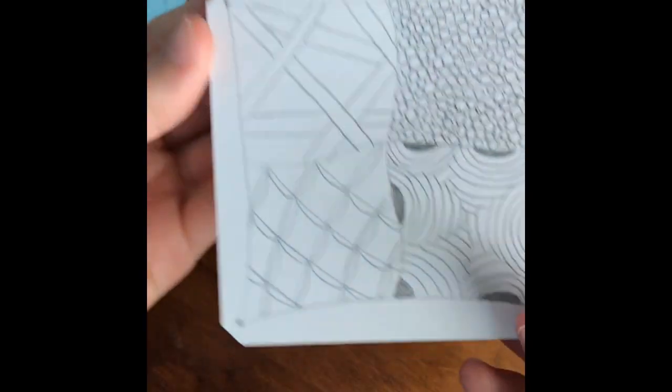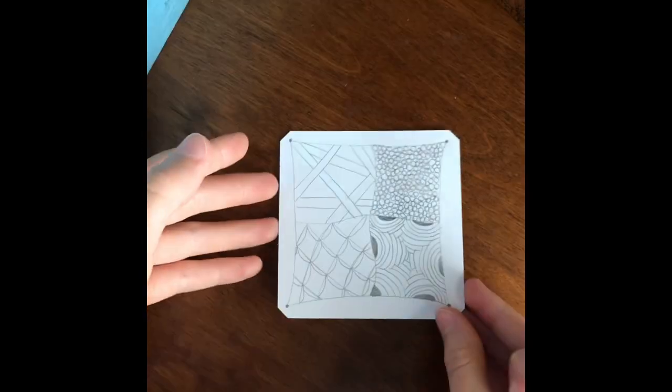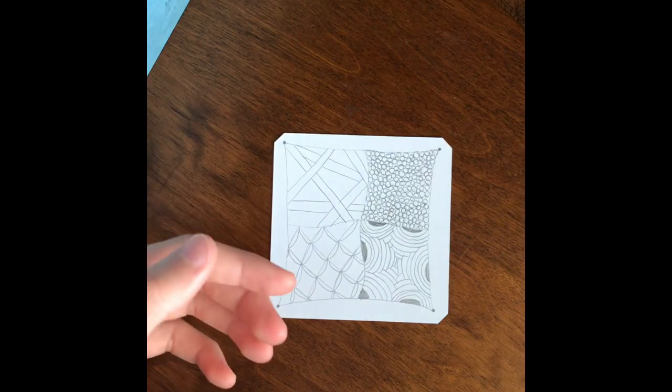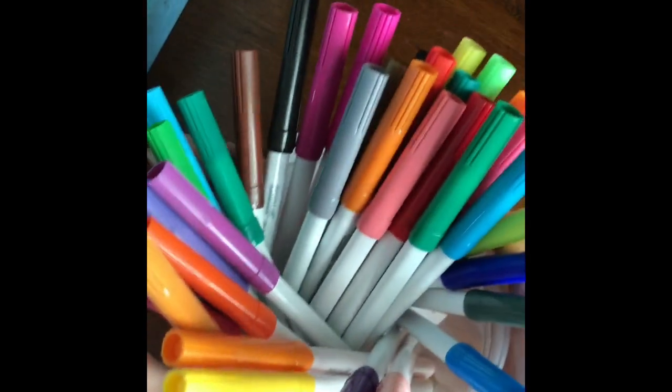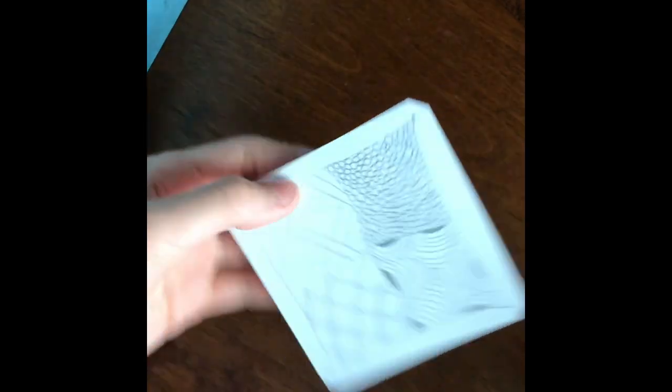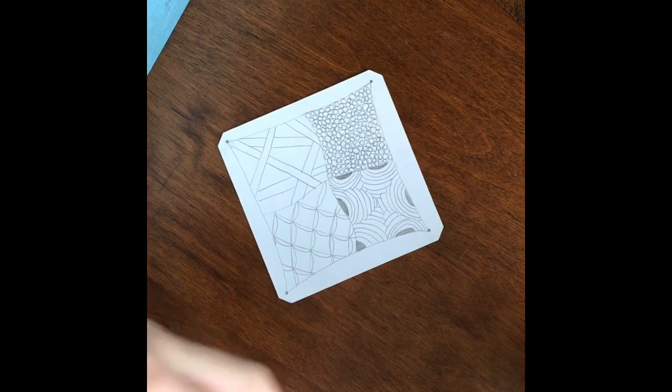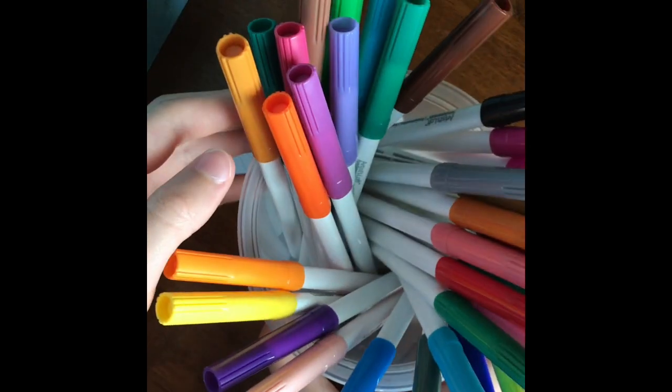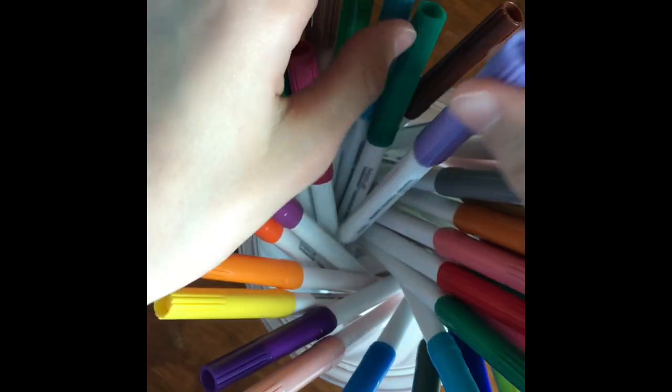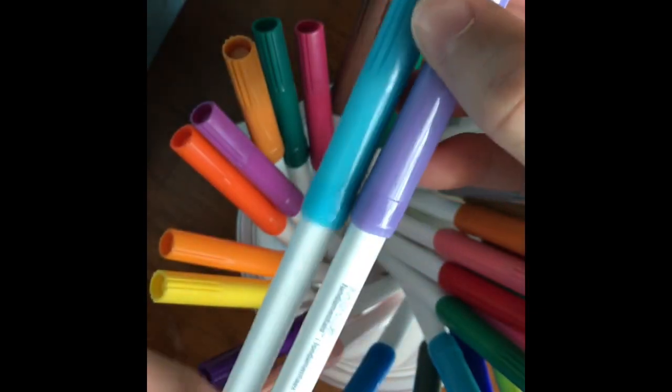And congrats. You've made your Zentangle. Now if you'd like you can color it. I have these markers. You can use whatever you like, colored pencils, other stuff. But I'm going to pick a nice delicate color combo for my chillin. I think I'm going to use these two colors.